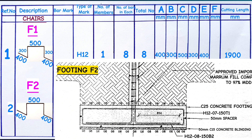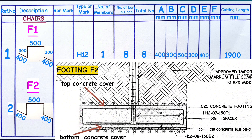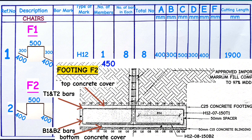For footing F2, the thickness is 450 millimeters including both concrete covers. To get the exact height for the separators, we calculate: 450 millimeters minus 50mm concrete cover at the bottom, minus 50mm concrete cover on top, minus 24mm for bottom bars 1 and 2 (each 12mm diameter), minus 24mm for top bars 1 and 2. That gives 302 millimeters, and we take 300 millimeters to ease cutting. So the height is 300 millimeters on each side.